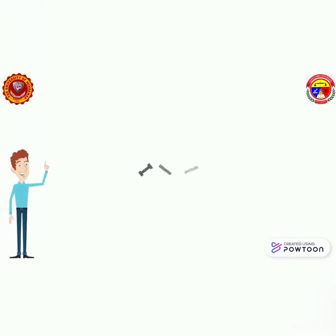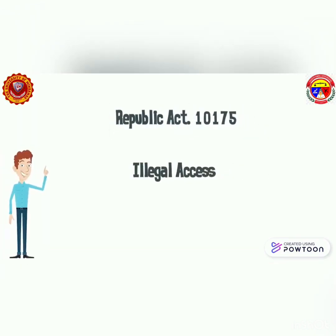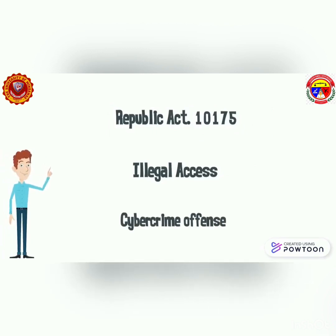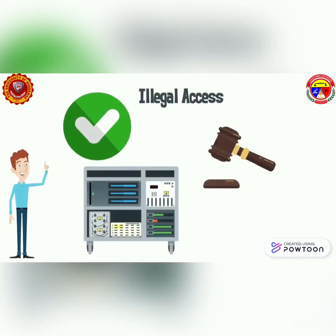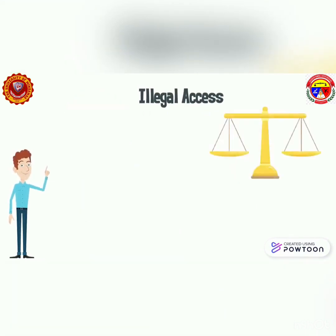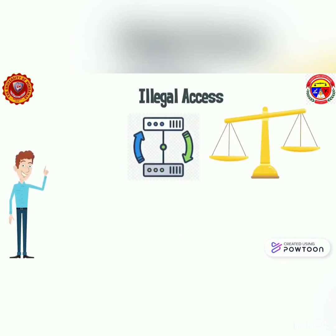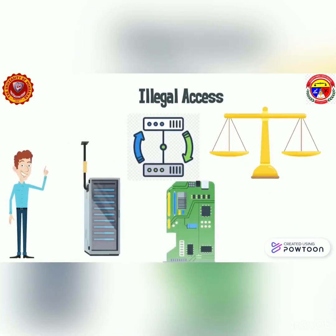Illegal access is under Public Act 10175, Section 4, Cybercrime Offense. The access to the whole or in part of a computer system without right offends against the confidentiality, integrity, and availability of computer data systems.